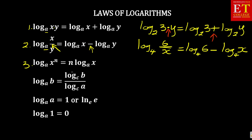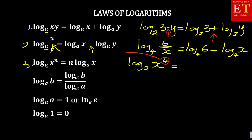Law number 3 says: if you are given log base A of X to the power of N, it is the same as N times log base A of X. For example, suppose you are given log base 2 of X to the power 4. The power 4 drops down to become the coefficient before the log, so it becomes 4 times log base 2 of X.